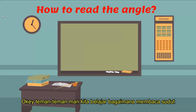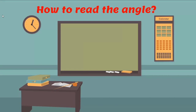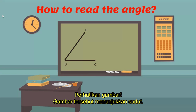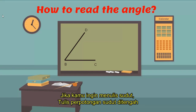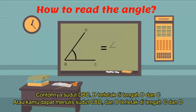Let's see how to read an angle. Look at the picture — it shows angles. There are two lines, DC and DD, and the corner is A. If you want to write the angle, write the letter of the corner in the middle. For example, angle TDC has D in the middle of T and C.